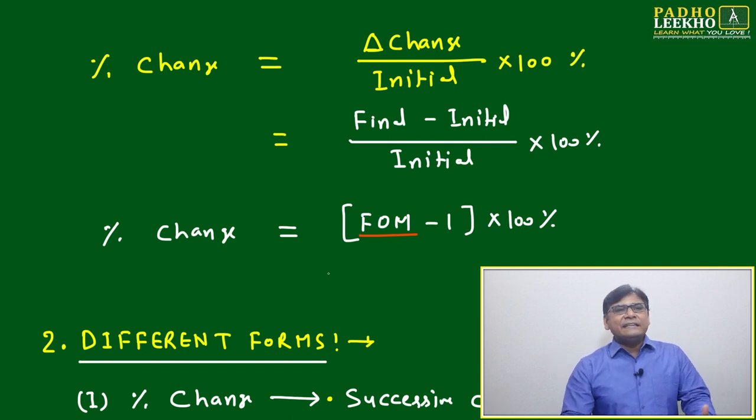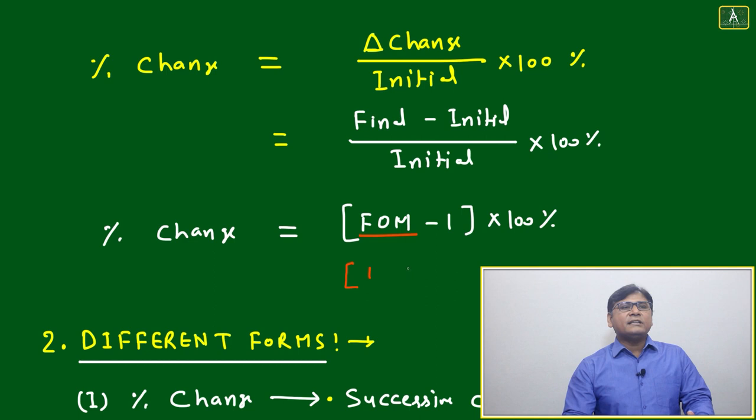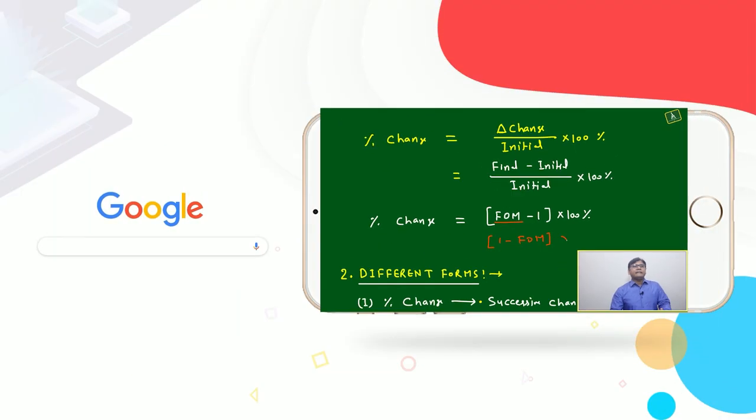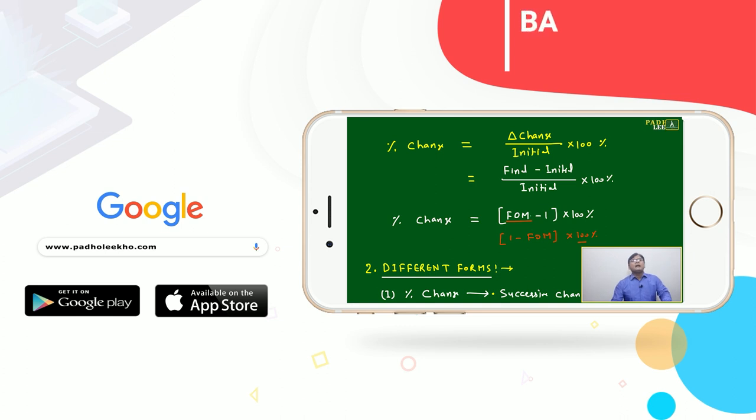If it is increasing or decreasing, if you want you can write separate formulas. But with factor multiplication minus 1, if factor multiplication is less than 1, then automatically you will get negative. If you are getting negative, it means it is decreasing.